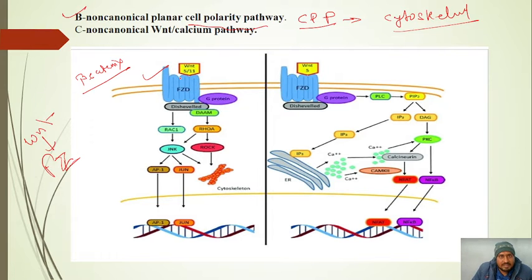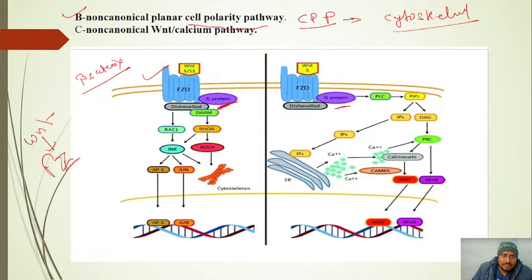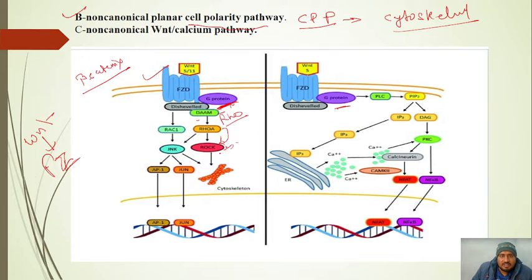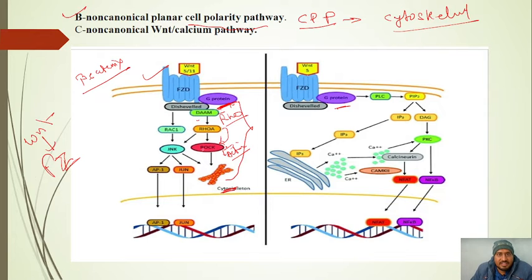When WNT binds the Frizzled receptor, it recruits Dishevelled protein and also a G-protein. In the non-canonical pathway, beta-catenin is not recruited; instead, G-protein plays the role. When G-protein is recruited, Dishevelled activates Daam1 (Dishevelled-associated activator of morphogenesis 1). Daam1 activates Rac protein. Rac activates Rock. Rock is responsible for cell polarity and activates actin polymerization, which forms cytoskeletal proteins.